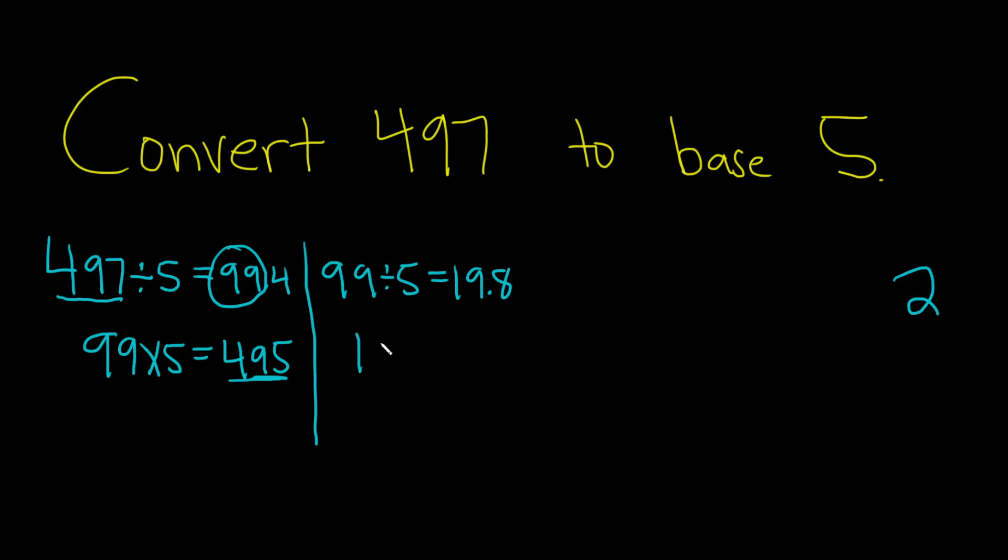So you do 19 times 5 in your calculator. This is 95. Then you subtract and get 4. The remainder is 4.